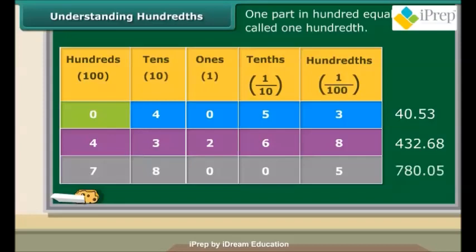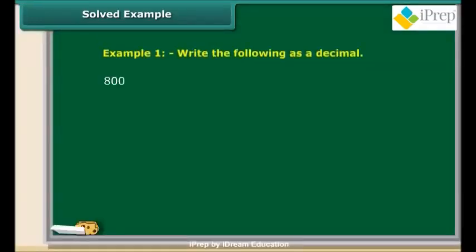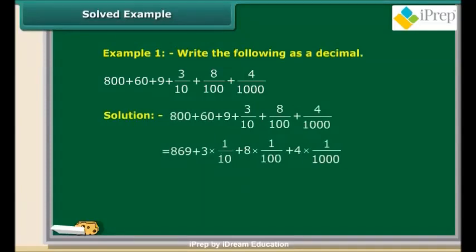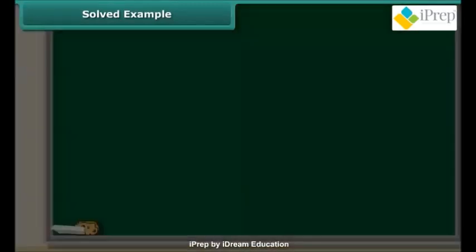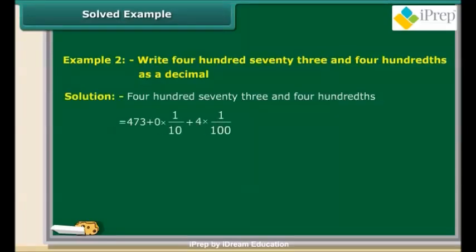We can extend the place value table further from hundreds to thousandths. Let us test our understanding by solving some questions. Write 800 plus 60 plus 9 plus 3 tenths plus 8 hundredths plus 4 thousandths as a decimal. 800 plus 60 plus 9 is 869. 0.3 plus 0.08 plus 0.004, which adds up to 0.384. So the answer is 869.384. Let us solve one more question. Write 473 and 4 hundredths as a decimal. In this number, 473 is the whole part. The decimal part is 4 hundredths, which can be written as 0.04. So the number is 473.04.